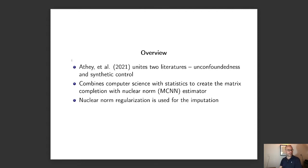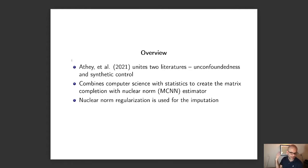They're going to unite two literatures: the unconfoundedness literature and the synthetic control literature. It combines computer science with statistics to create a method called matrix completion with nuclear norm. You can think of the nuclear norm like lasso — it's a regularization procedure with a penalty. The nuclear norm is going to be a linear regression with a particular kind of penalty that has certain nice properties, and it will be used for imputation.